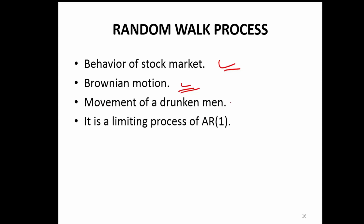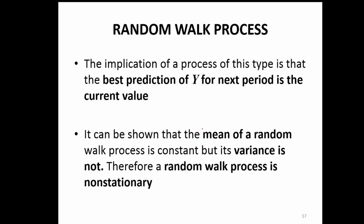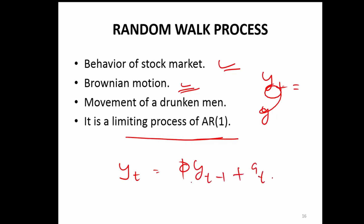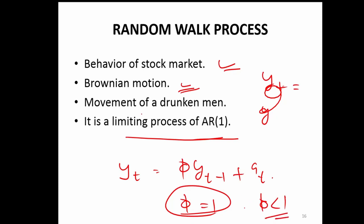A movement of a drunken man — somebody who is drunk — you will have no pattern. If you try to study his pattern of walking, there is no pattern at all. It's also a limiting process of an AR(1) process: yt = phi * y(t-1) + at. When phi equals 1, you get the random walk process; if phi is less than 1, you have the AR(1). So random walk is basically the special case of AR(1) where you cannot go ahead in building a forecasting model.